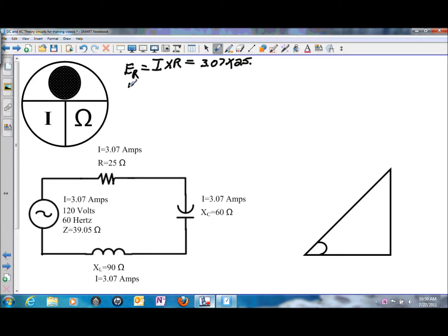That will give us a voltage drop on the resistor of 76.75 volts.